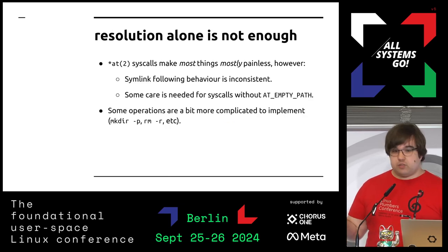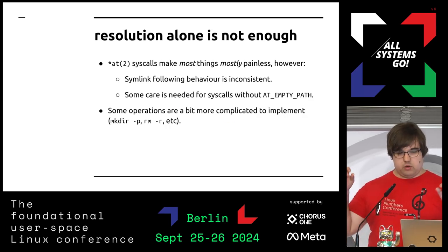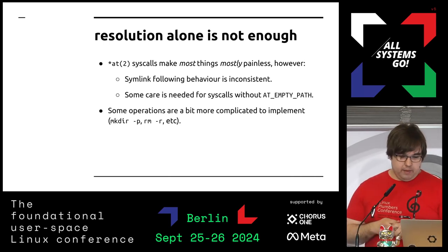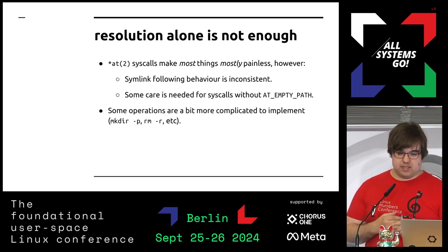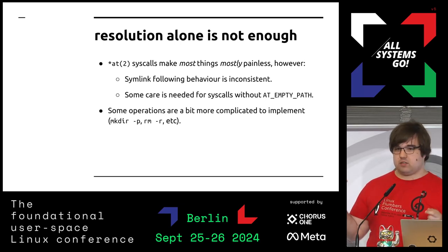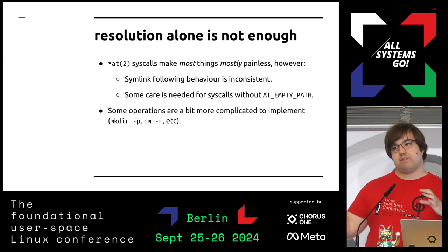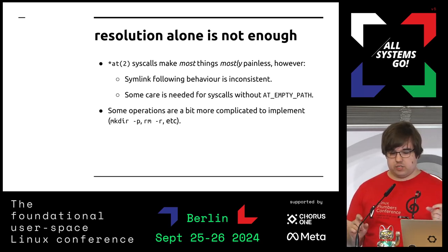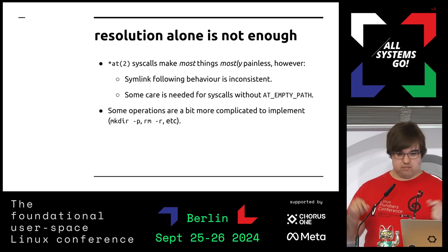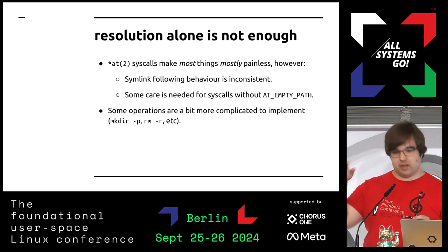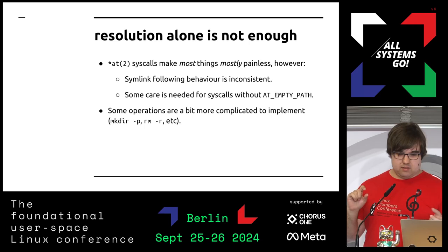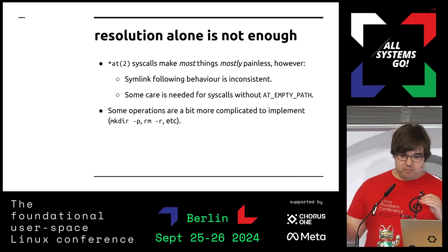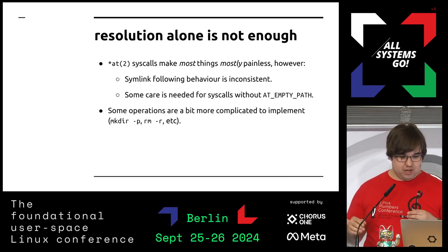So with openat2 and these other things, you can resolve a path and get a handle to it, and that's actually most of the work, at least in theory. But there's still a lot of extra things that need to get done. You need to make sure you use all the *at versions of syscalls, which requires some fiddling because some operations don't have an obvious *at syscall — like openat, mkdirat, and so on.